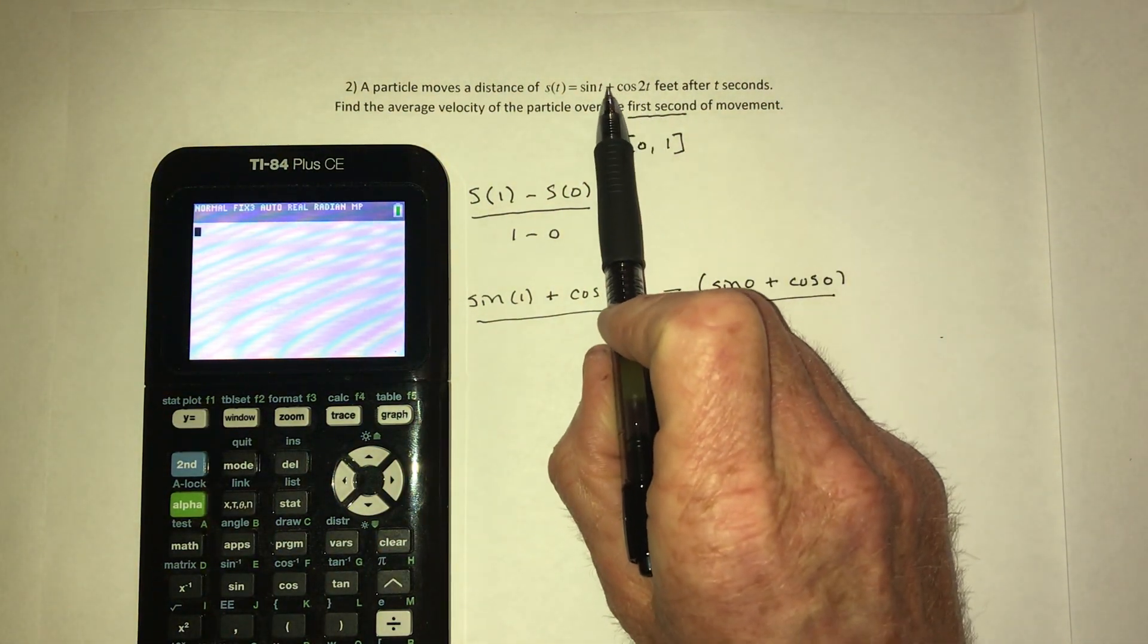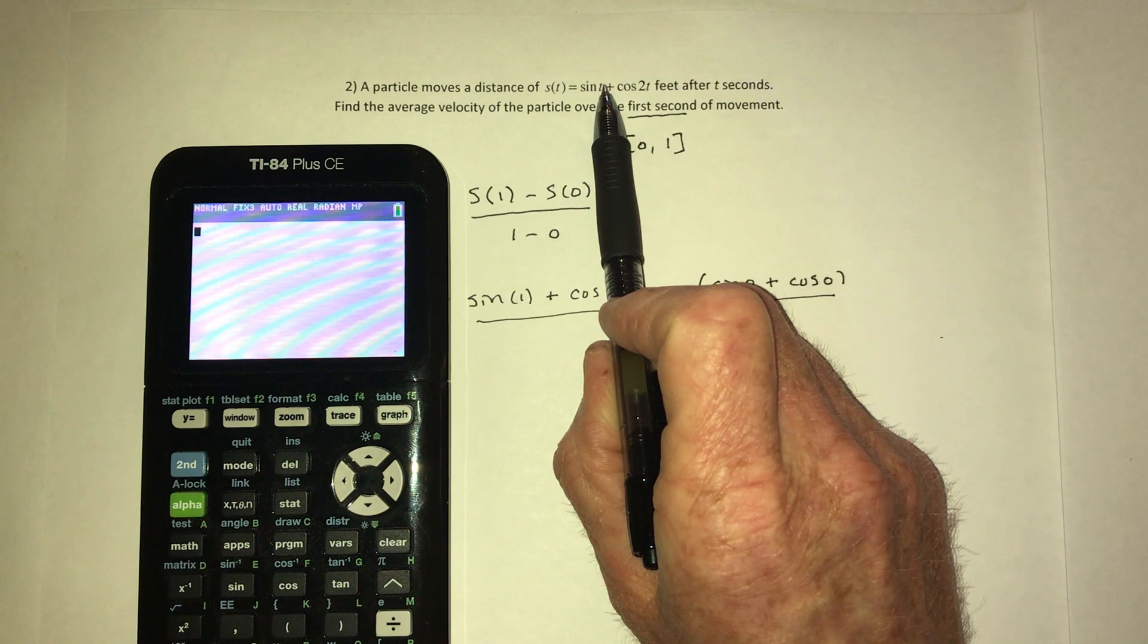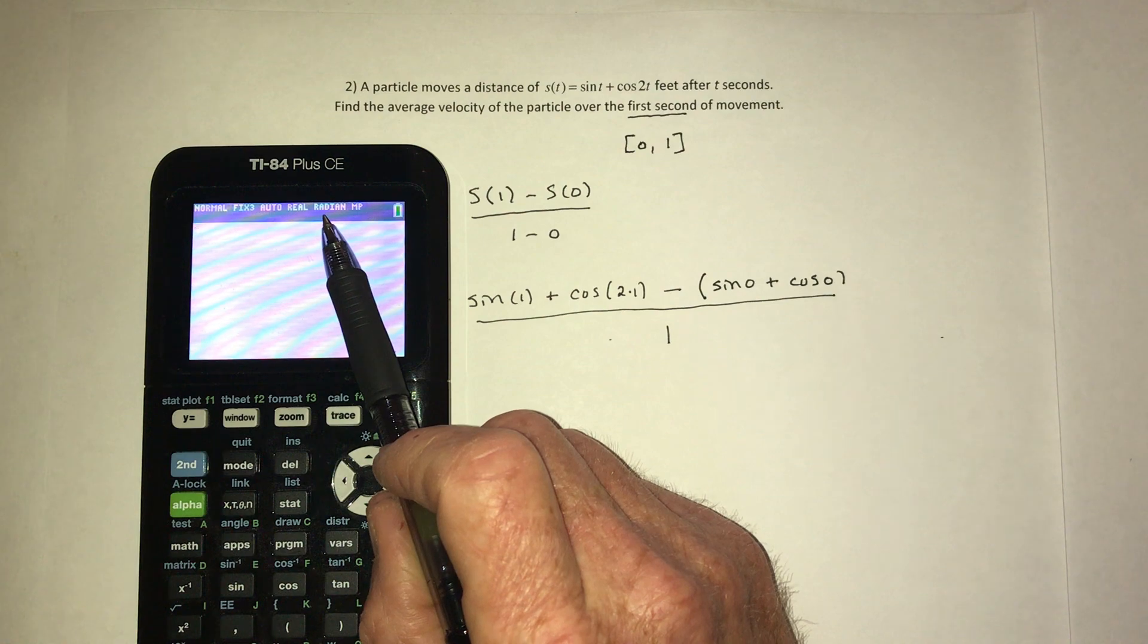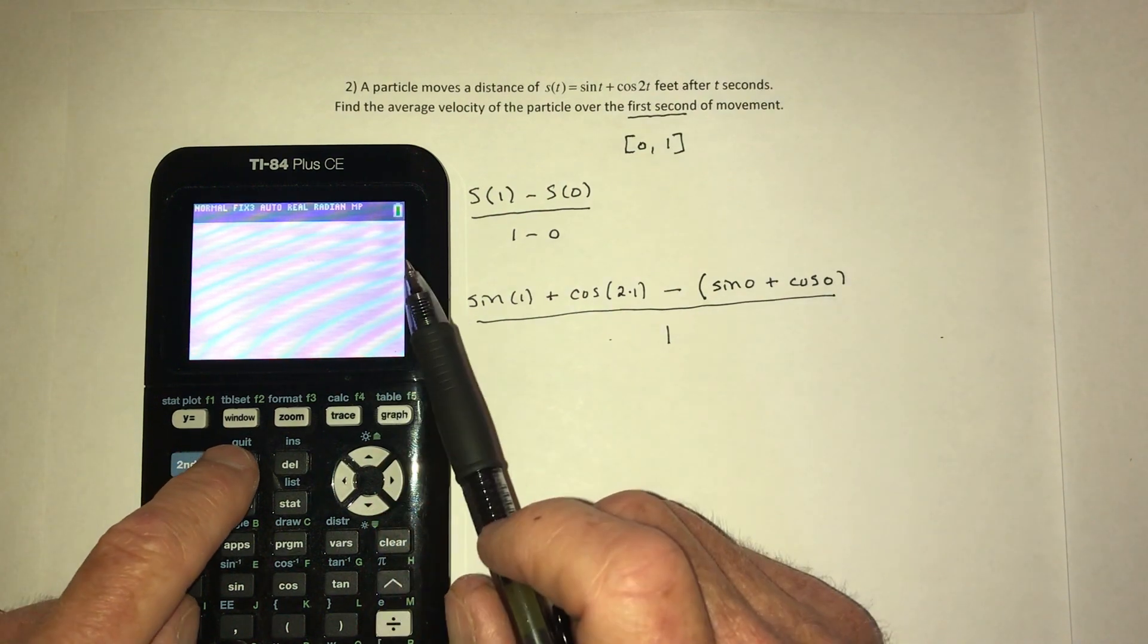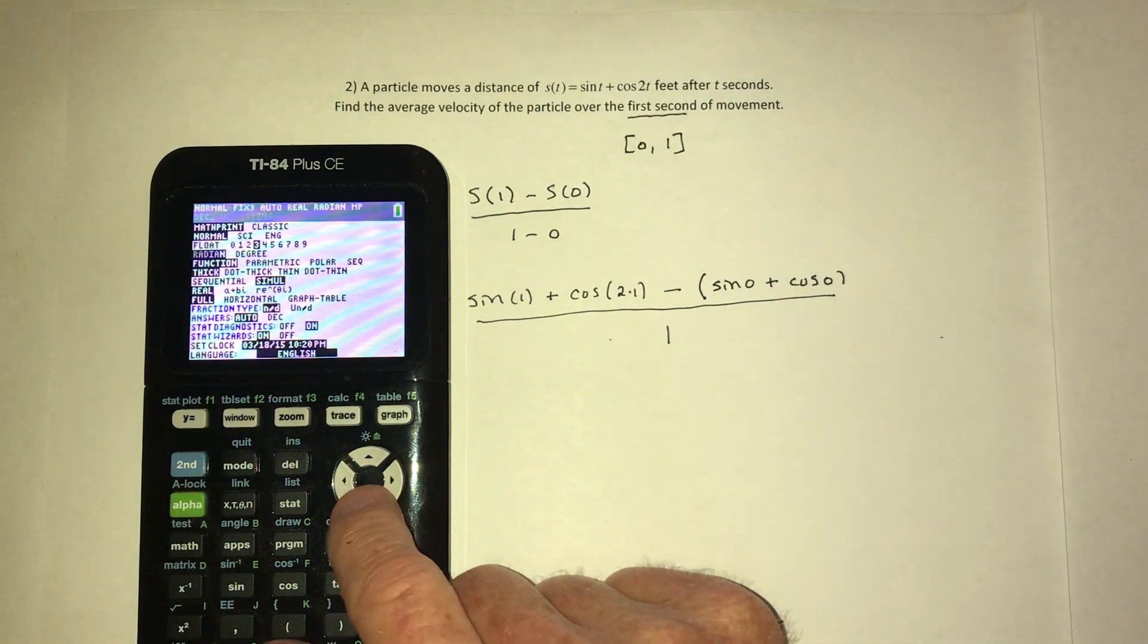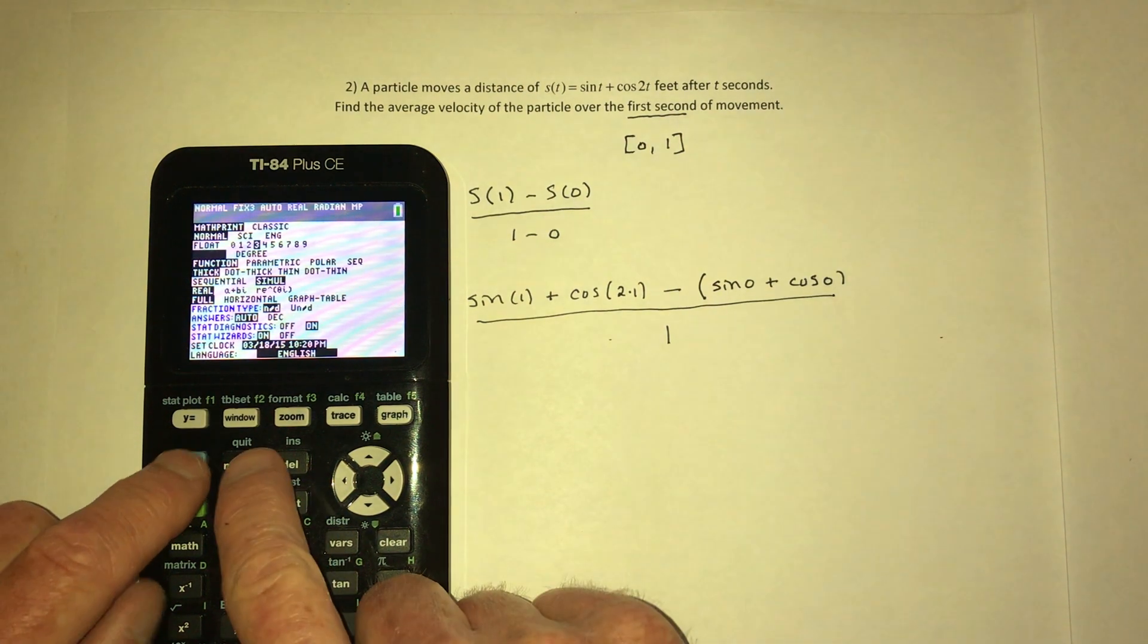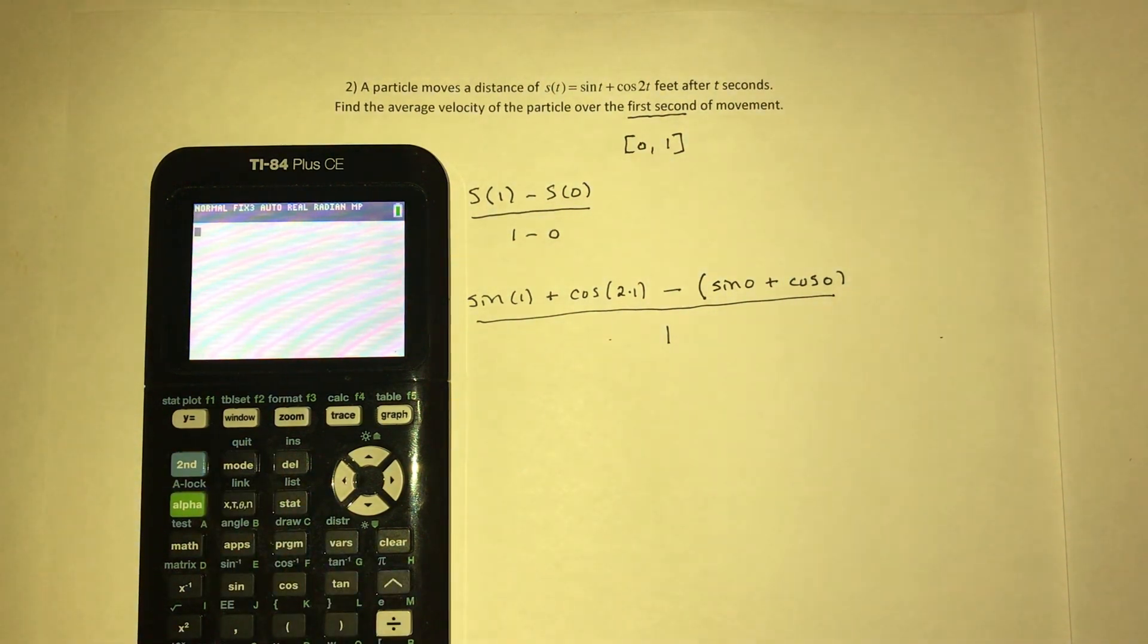So in here there is no little degree symbol, and if there is not a degree symbol then that means it's in radians. So make sure the calculator is in radians. If yours isn't, go to mode, change this to radians, hit enter, and now it's in radians. So we need sine of one plus cosine of two.